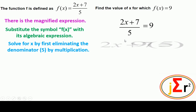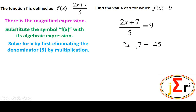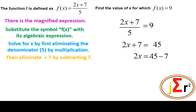We will have 9 times 5 on the right-hand side. Of course, 9 times 5 is 45. Then we will eliminate the 7 that is added on the left-hand side by subtracting 7, and do the same on the right-hand side to balance the equation. Subtracting 7 from the left-hand side eliminates it, and on the right-hand side we have 45 minus 7, which is 38.